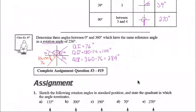That brings us to the end of lesson one in trigonometry — angles and ratios. Check the sideboard to see which questions need to be done, and we'll see you next time.